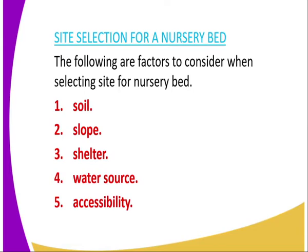We have factors that we are supposed to consider when selecting the site for a nursery bed. The first one is the type of soil. The soil should be deep, fertile, and well-drained so that it can promote the growth of the seedlings. The second factor is the slope — the site should be on a gentle slope because a gentle slope facilitates drainage. The third factor is shelter; you should locate the site near trees which will act as a windbreaker.